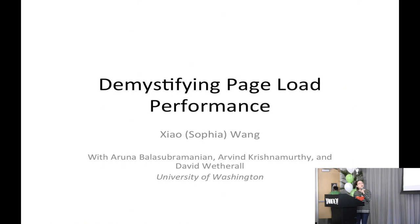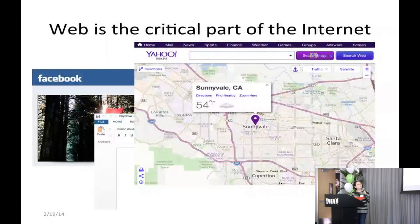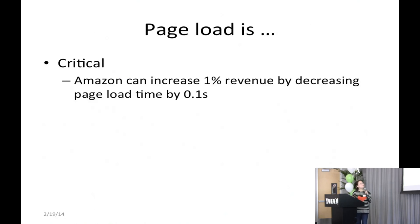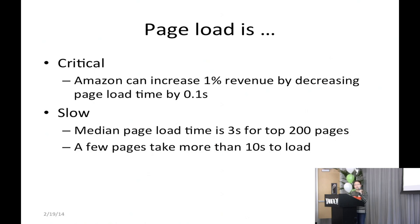The web is a critical part of the internet. There are many applications including Maps, Microsoft Office, and Facebook, the social network, that are now all on the web. Page load is critical. Studies have shown that Amazon can increase revenue 1% by decreasing page load time by 100 milliseconds. However, page load is slow. From our own measurement study, we find that the median page load time is as much as 3 seconds for the top 200 web pages, and a few web pages even take more than 10 seconds to load.